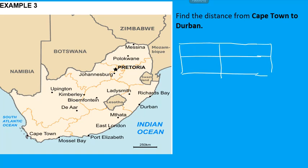In the last example, I'll show you how to use the crisscross method to calculate distances from one place to another using a map. Take a ruler and measure the distance of the number line at the bottom. Let's say the distance is 1.9 centimeters from start to end, and that represents 250 kilometers in real life. Put that information into your table.